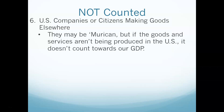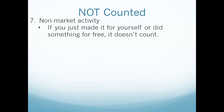US companies or citizens making goods somewhere else don't count towards our GDP — it matters where it's made, not who makes it. Non-market activity also doesn't count. If something doesn't go onto the market and isn't sold, it doesn't count towards GDP. If you make a pie for yourself, it doesn't count; if you make a pie and sell it, then it counts. The reason is that if it's not sold, we don't know what it's actually worth. If you say mowing your lawn is worth $500 but nobody actually pays you that, we can't verify the value. If it doesn't go onto the market, we don't count it.